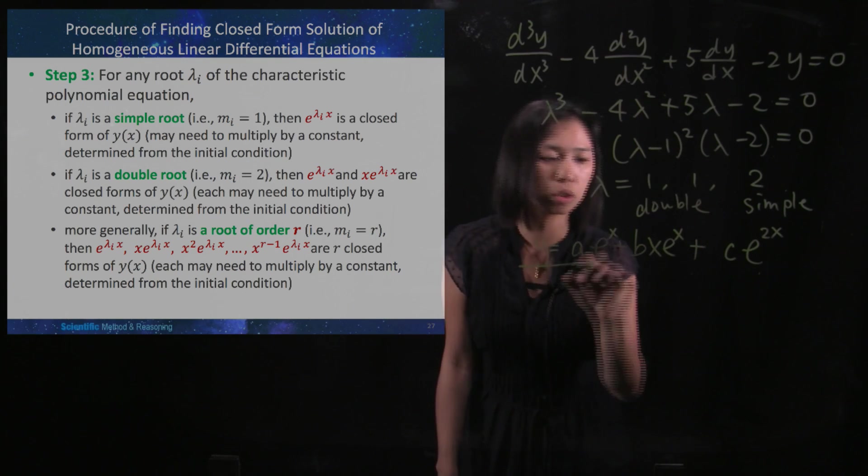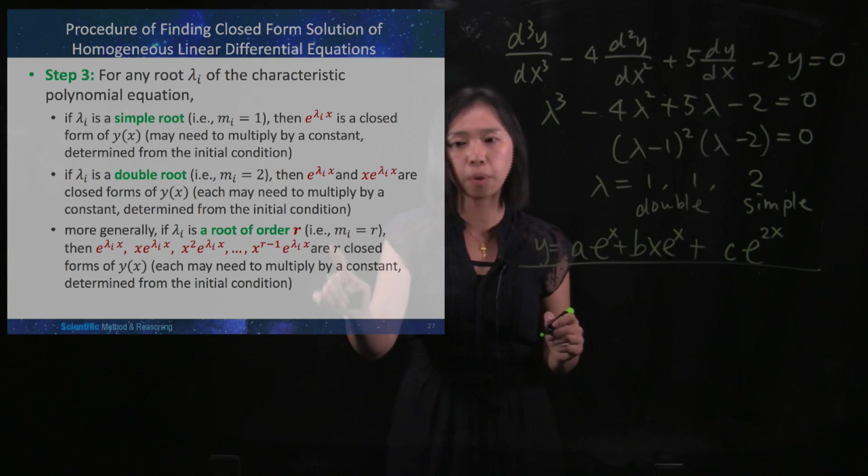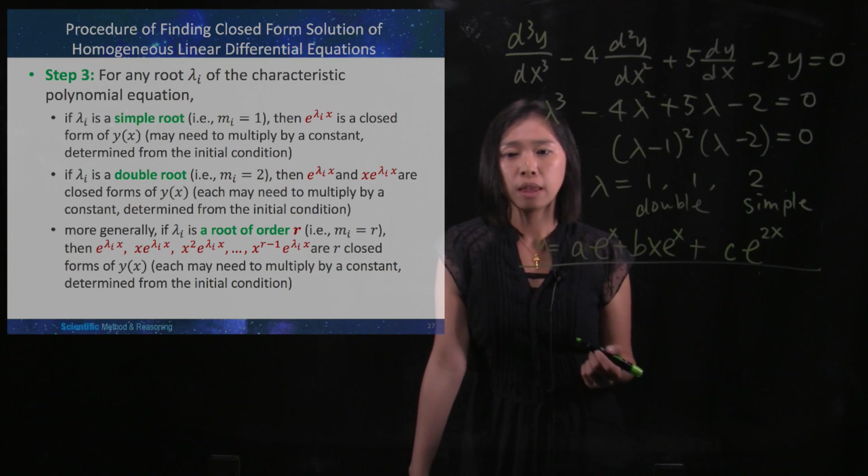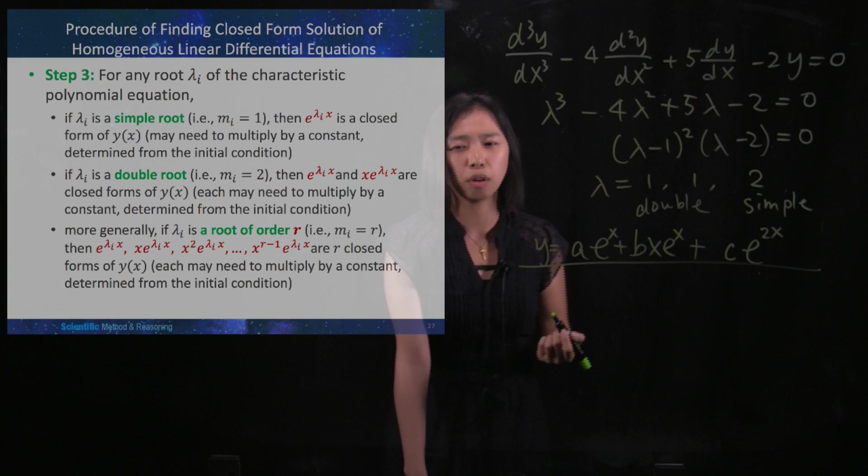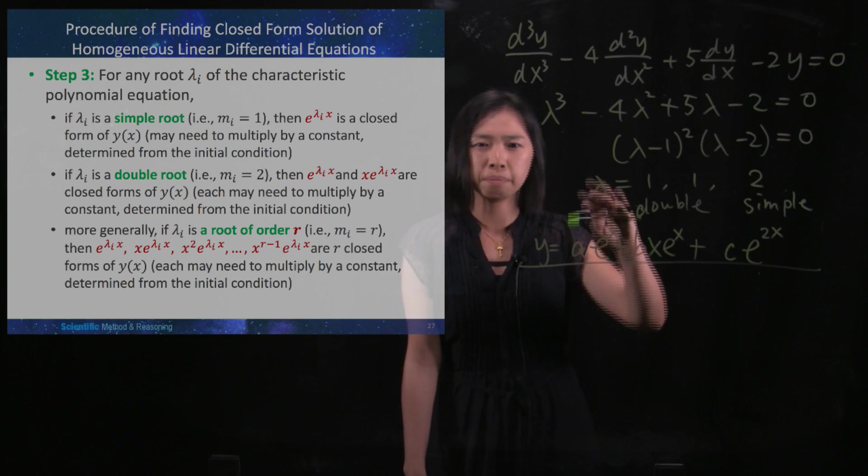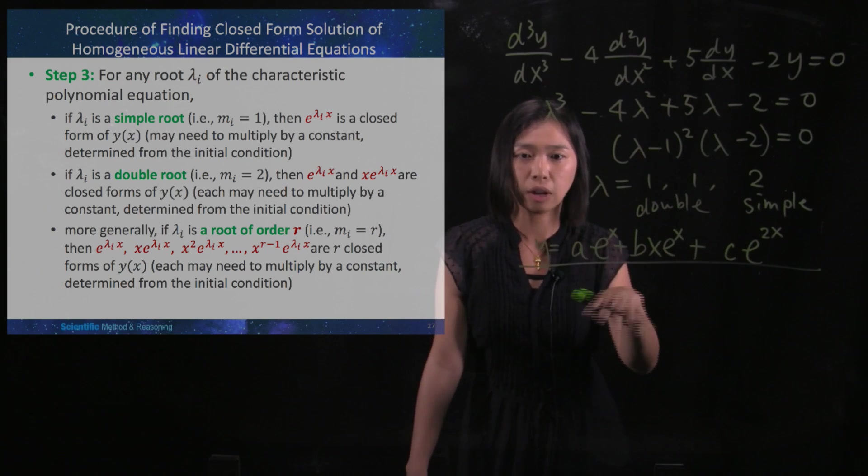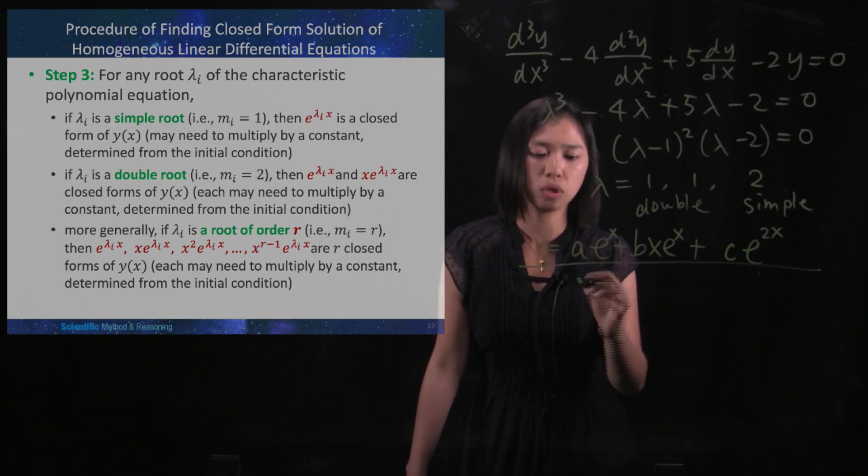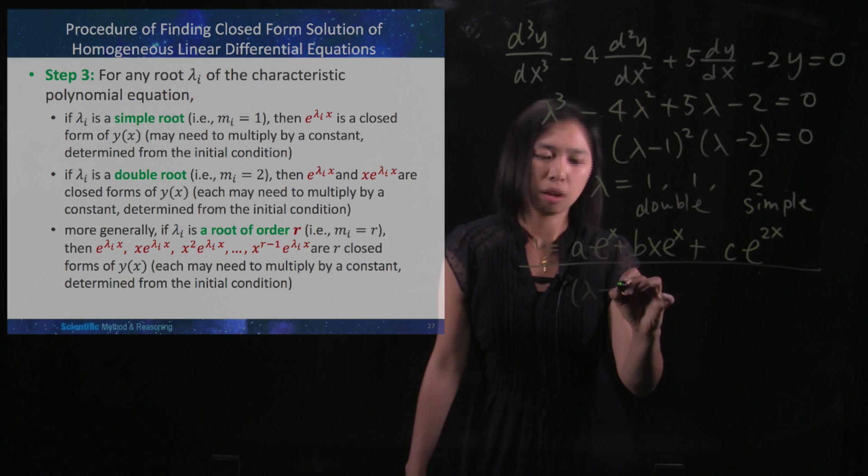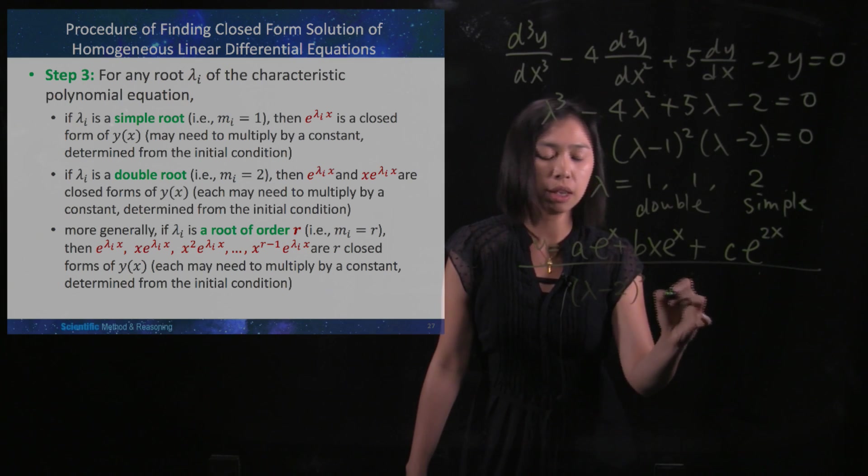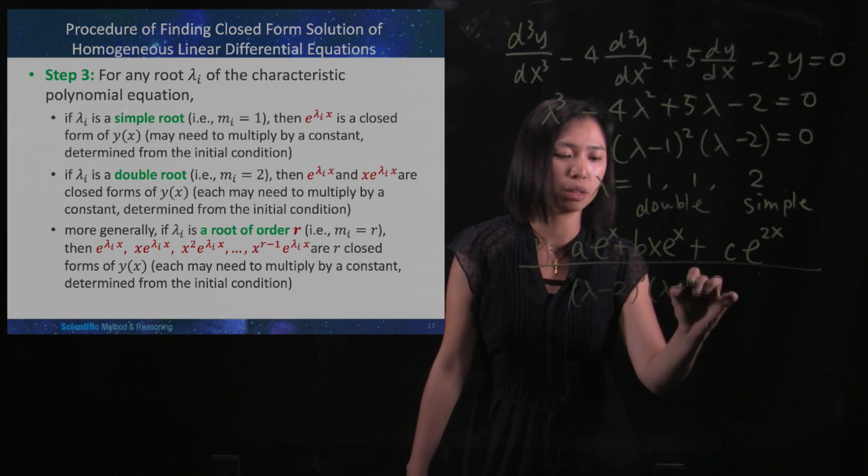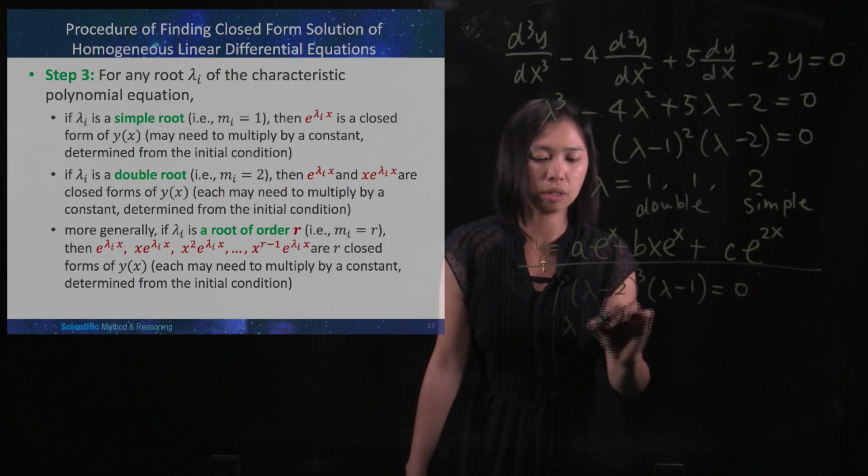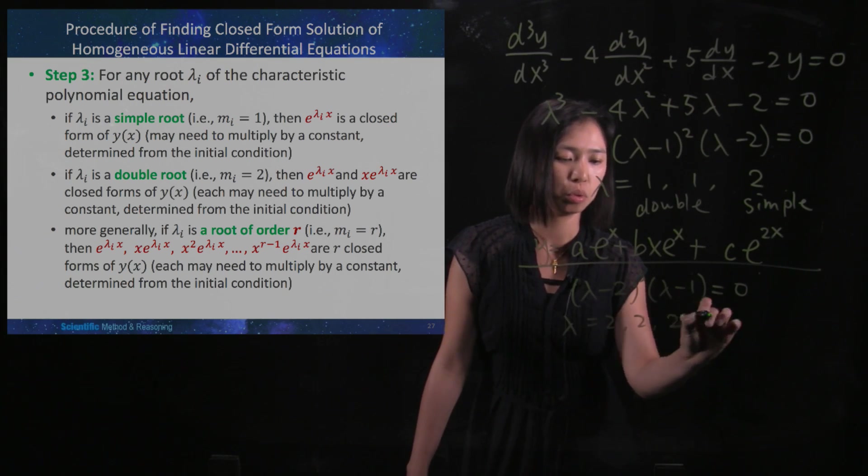Right now we are going to go through the third bullet point here. So it's said that more generally, if λ is the root of order r. So maybe we forget about this example and I will write you another one. If when you are doing your factorization, you got something like (λ - 2)³ and then you have λ - 1 = 0, then you would have λ is 2, 2, 2, 1.